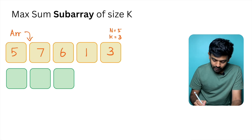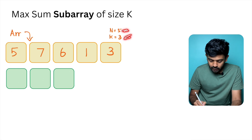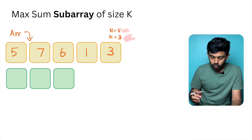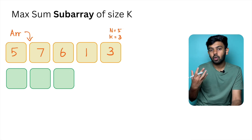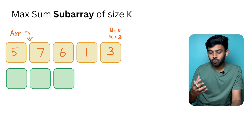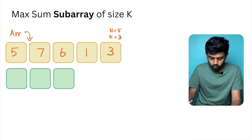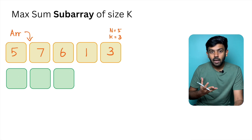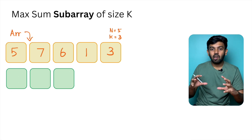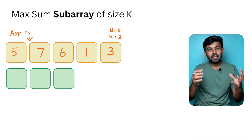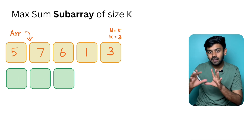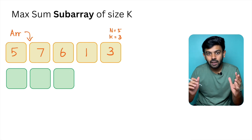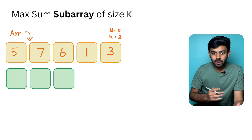The array size is 5 and k is equal to 3. So let's consider a subarray of size 3. If you look at the subarray, it's not like any subset of this array — it needs to be continuous.